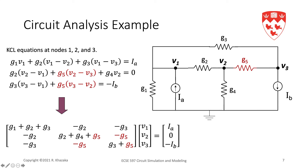Now let's look at resistor G5. G5 is connected between node 2 and node 3, so it appears in the KCL equations at node 2 and node 3. In the matrix we see G5, −G5, −G5, G5. You can see the same pattern here: G2 appears in rows 1 and 2, columns 1 and 2; G5 appears in rows 2 and 3, columns 2 and 3.